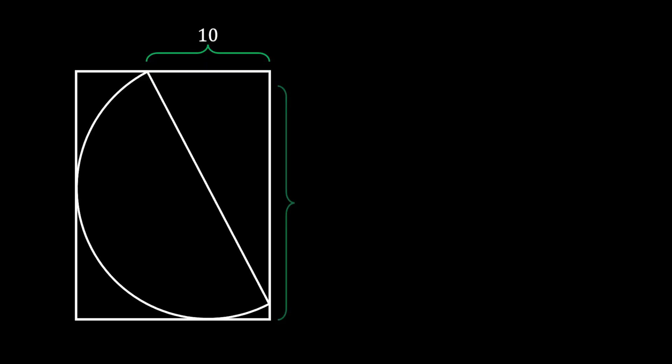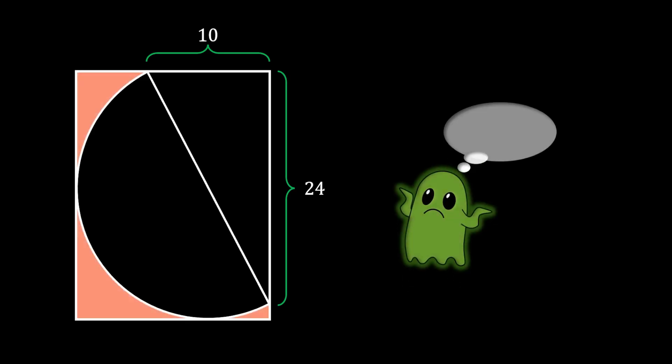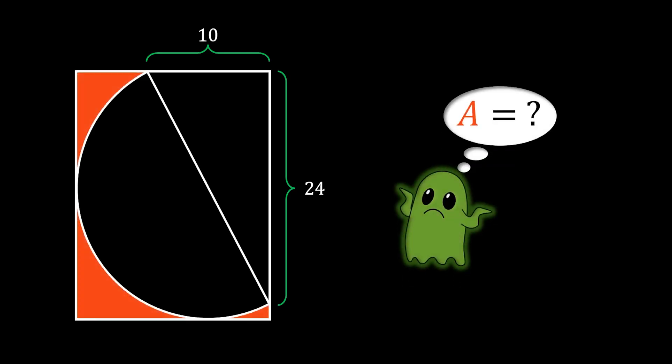Let's start with a random rectangle and then inscribe a half circle in it at a certain random angle. In that way, we will form a right triangle at the right side of the rectangle, and that right triangle will have legs of 10 and 24. The question is: can we find this orange shaded area with the information given?